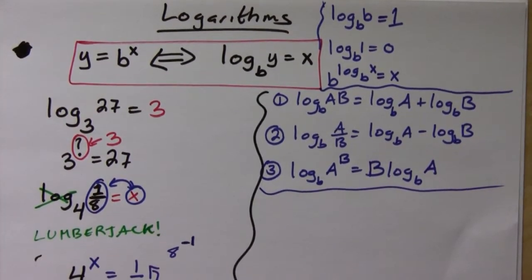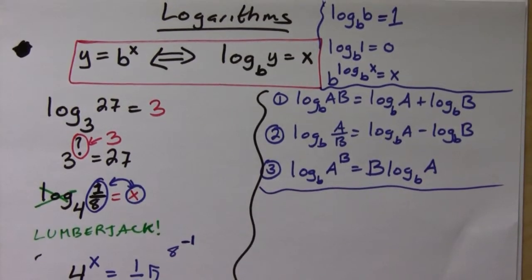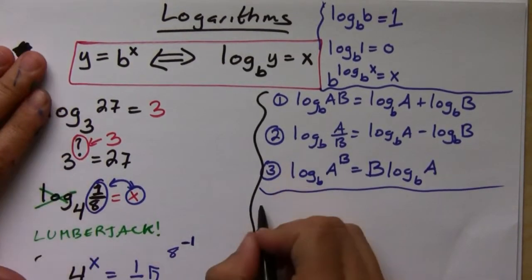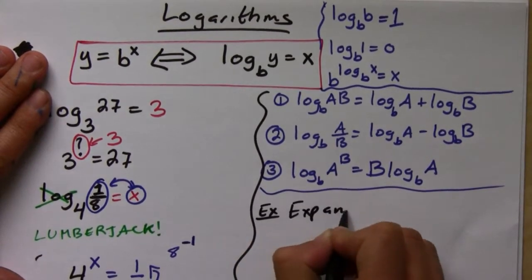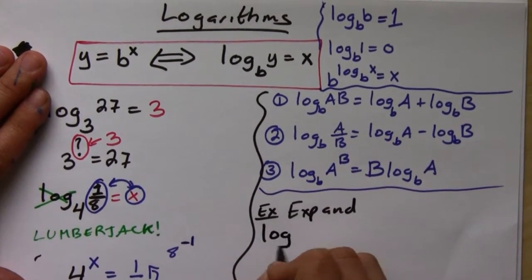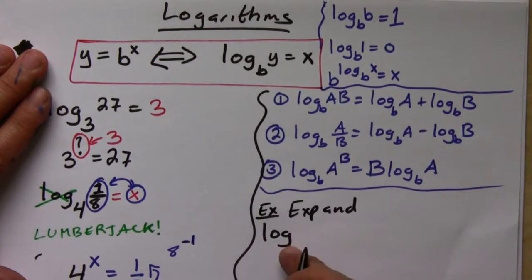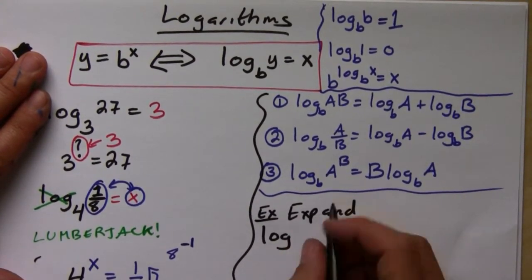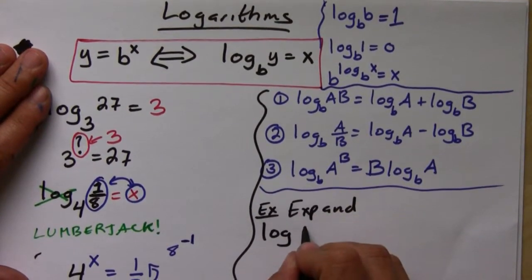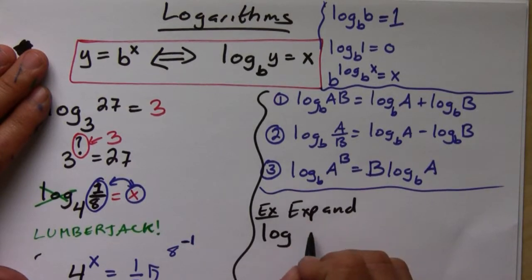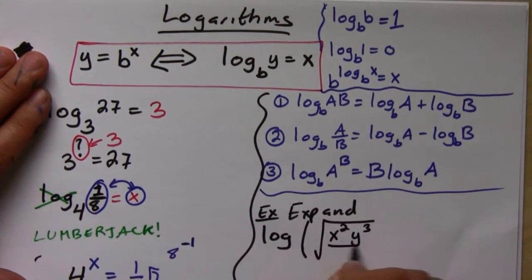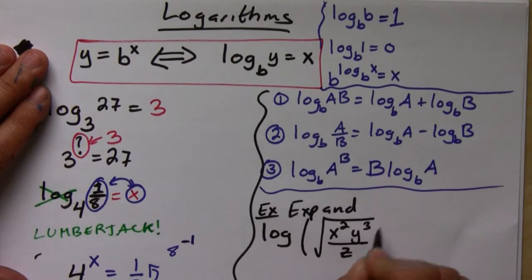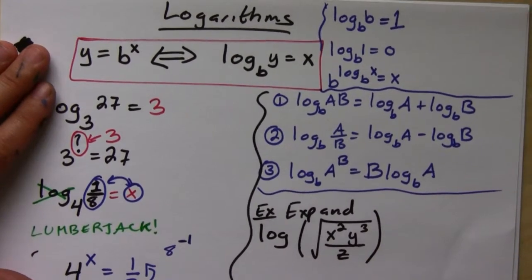Let's expand the expression log of the square root of (x² y³) over z. Remember, a log without a base means base 10. The first thing to do is convert the square root into an exponent — the square root is the same as raising to the one-half power.